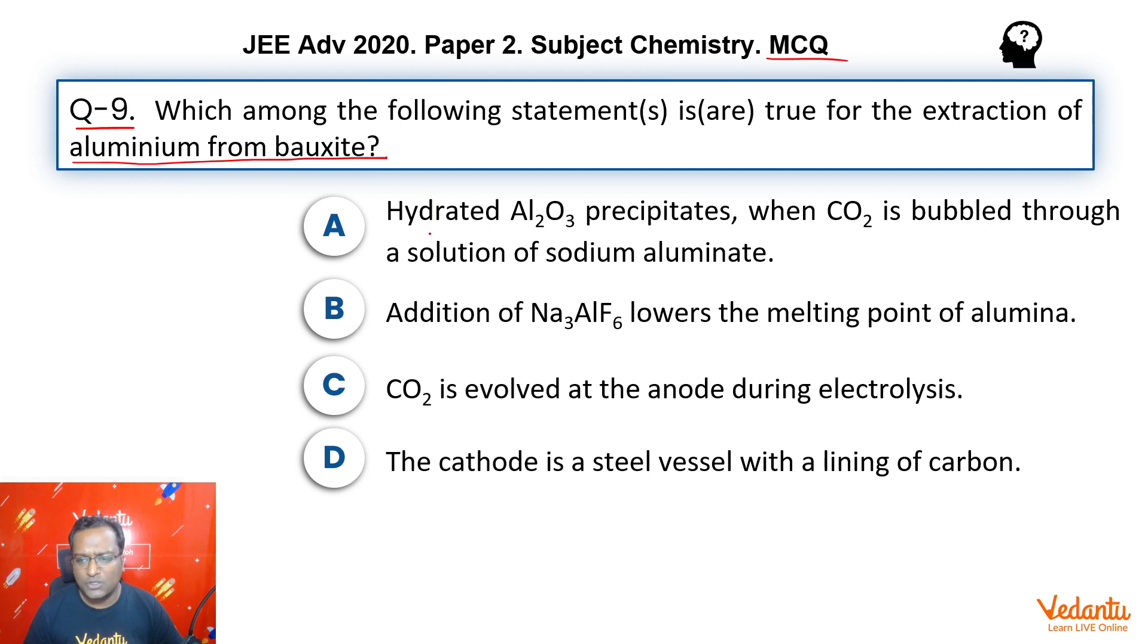They are talking about four parts. Option A: hydrated Al₂O₃ precipitates when CO₂ is bubbled - we're talking about Bayer's process. Option B: addition of Na₃AlF₆ lowers the melting point - this is Hall's process. Option C: CO₂ is evolved at anode - same thing, Hall's process. And lastly, option D: the cathode is a steel vessel with a lining of carbon - this also is talking about Hall's process itself.